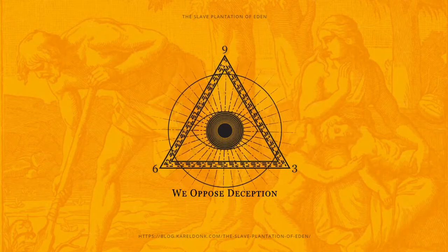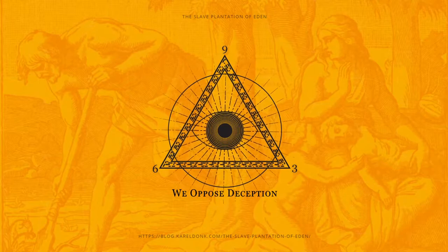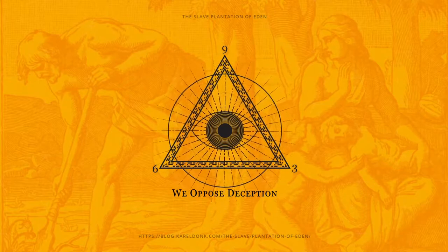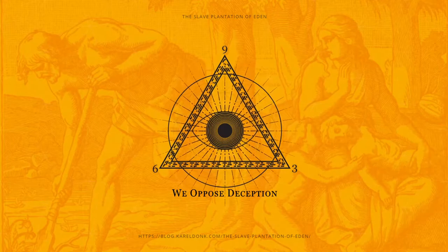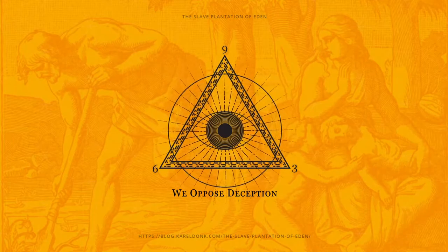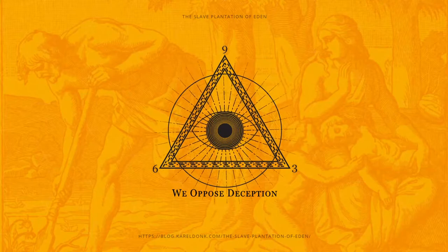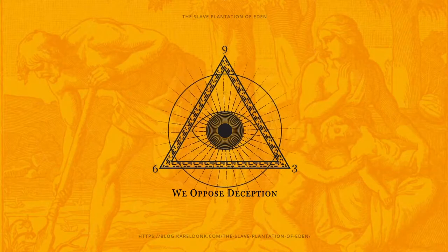Looking at it from the perspective of the Bible, it all started with a slave plantation called the Garden of Eden. Most people don't realize this, but yes, the Garden of Eden was essentially the first slave plantation that we know of.